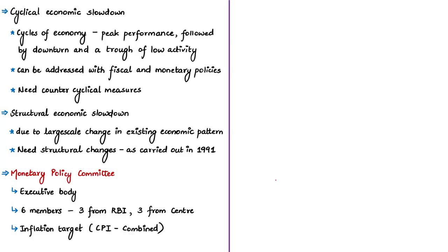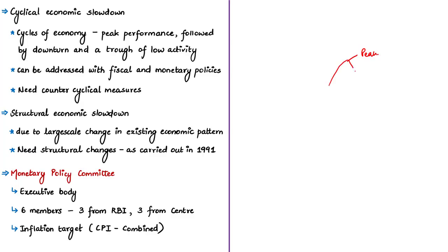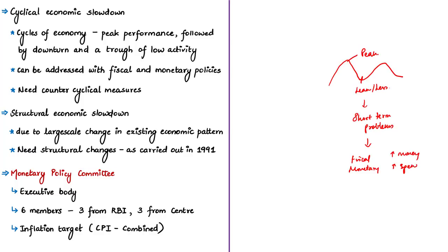A cyclical economic slowdown is a part of the business cycle which has its peaks and troughs. The economy moves in cycles with periods of peak performance followed by a downturn and then a trough of low activity. The cyclical slowdown is part of that cycle with lesser economic activity. These are expected to be short-term problems addressed with an adequate mix of fiscal and monetary counter-cyclical measures — like pumping more money into the economy, increasing government spending, or reducing tax rates. Counter-cyclical measures can ease the economy when it is performing too well, or stimulate it when facing a slowdown.